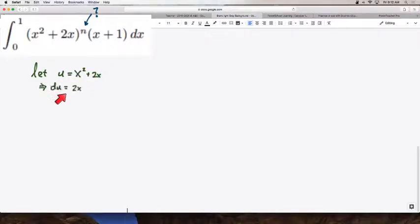therefore du will be 2x plus 2 dx, and if we take half of both sides, we get half du is equal to x plus 1 dx.